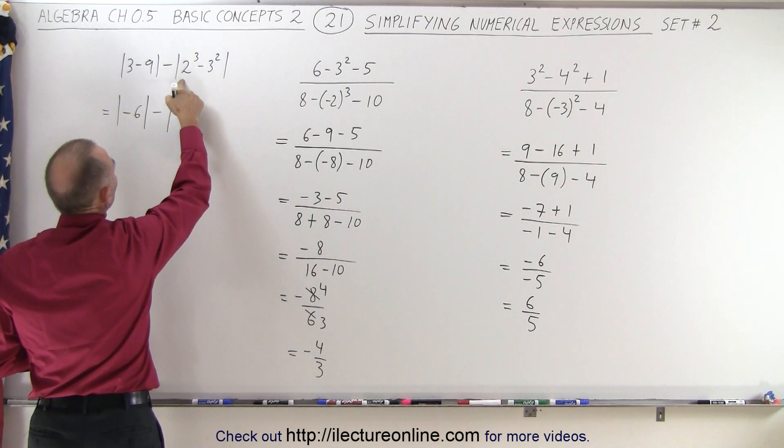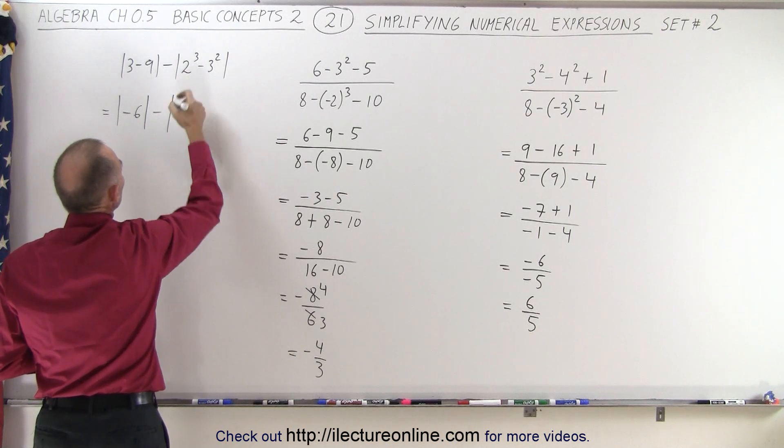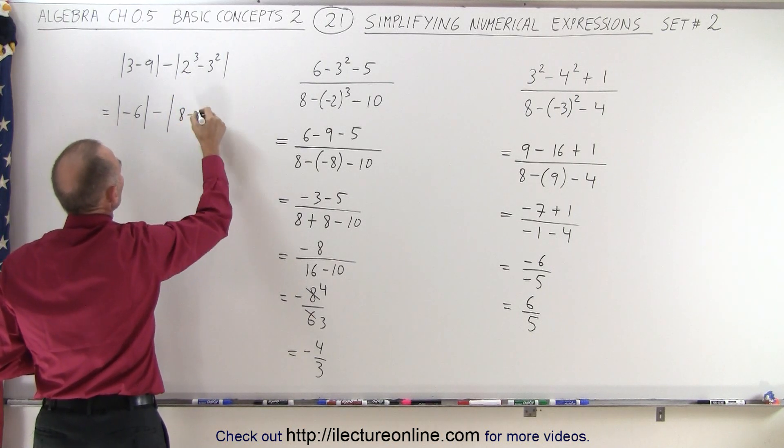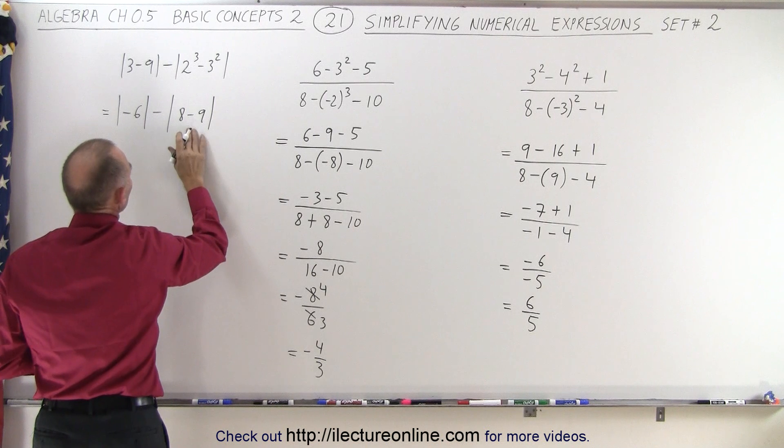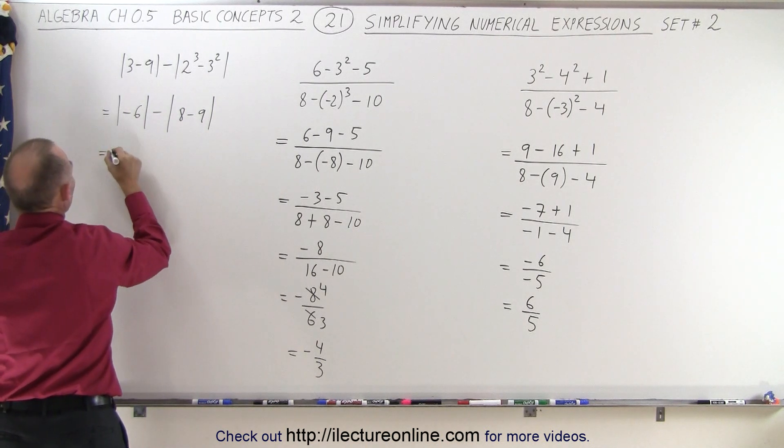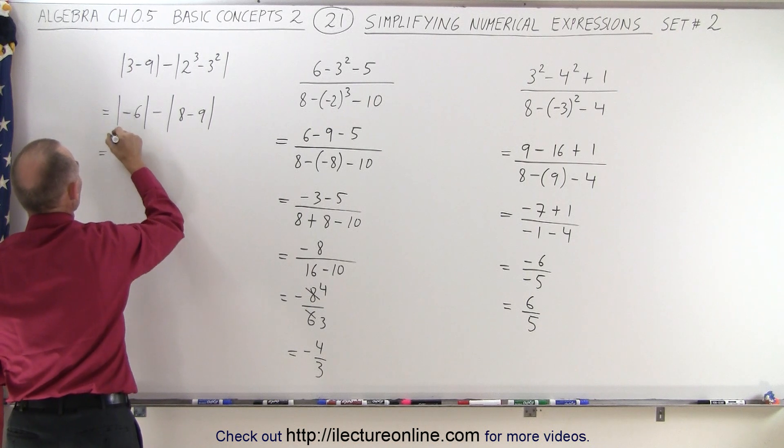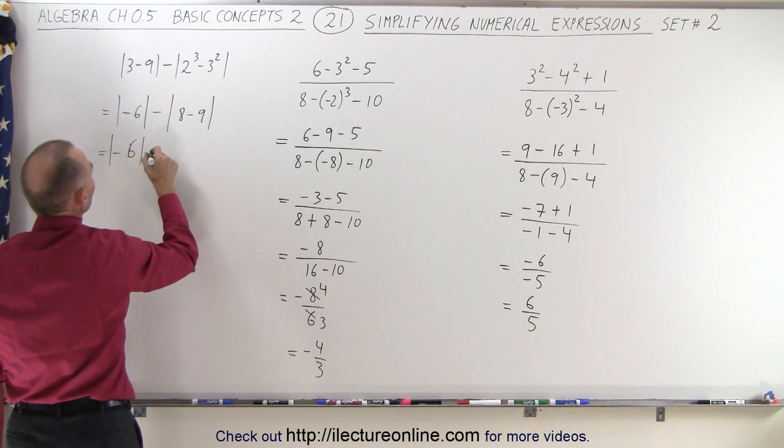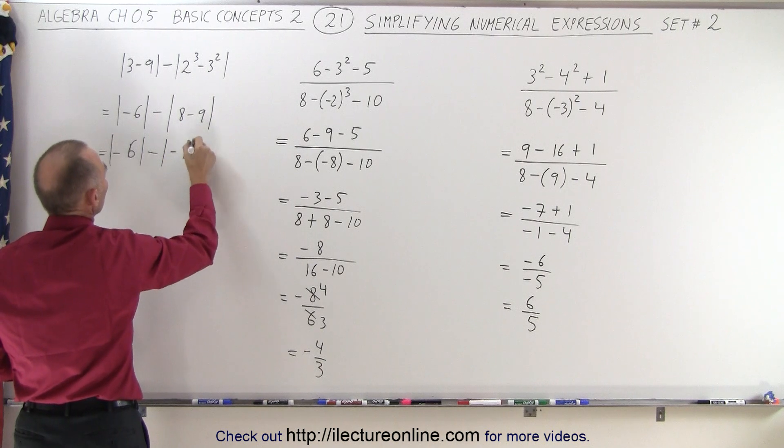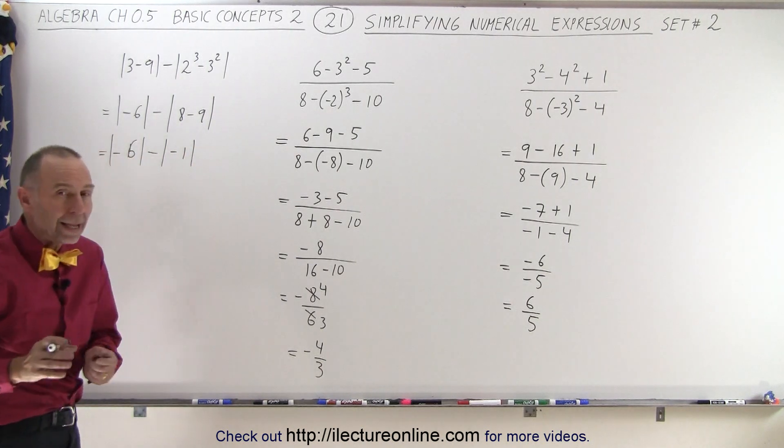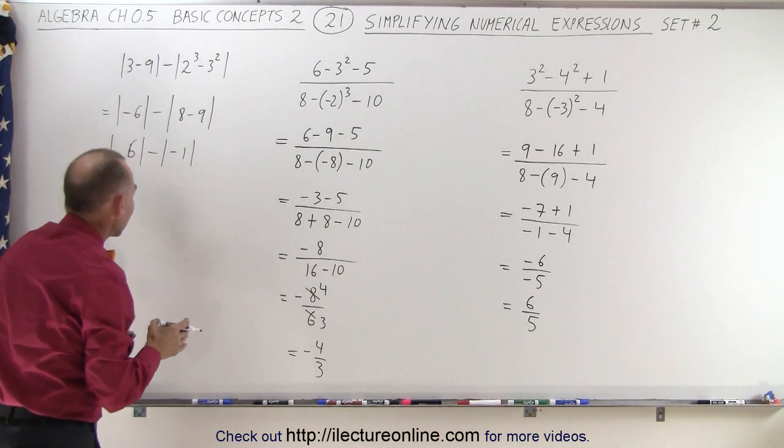Minus, here I must take care of the exponents first. 2 cubed, which is 8, minus 3 squared, which is 9. Then I simplify this. I end up with a minus 6. Minus 6 inside absolute value signs. Minus 8 minus 9, which is a minus 1.